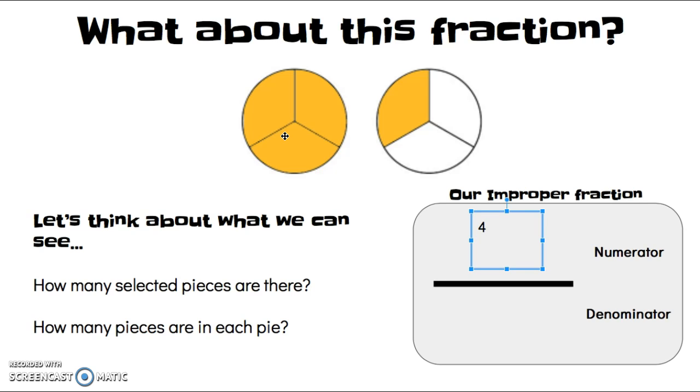And when we talk about our denominator, that's how many pieces of the pie there are. How many pieces in each pie? There's 1, 2, 3. So, that would mean that my denominator needs to be 3.